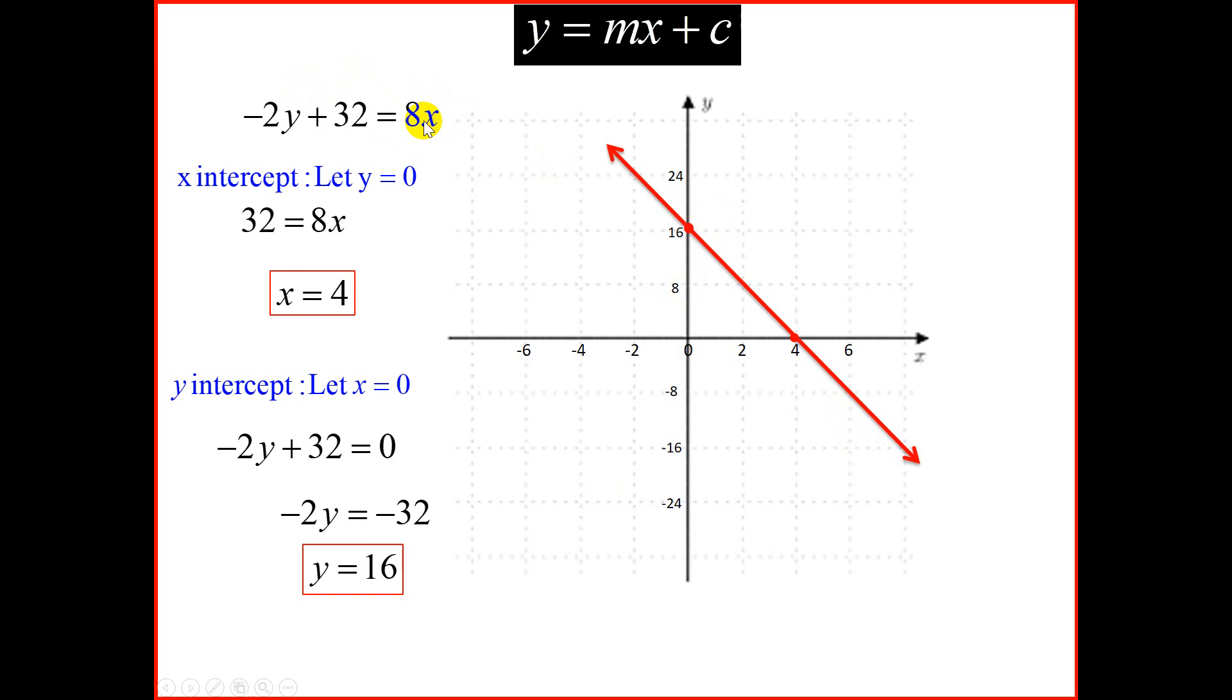Another way to do this is we could have brought this equation to standard form. Minus 2y plus 32 is equal to 8x. We could have brought this equation to y form. In other words, solve for y. Step 1, take your 32 on the other side, becomes negative 32. Minus 2y is equal to 8x minus 32. Then we're going to divide right through by negative 2. So that will give us y. 8 divided by negative 2 is minus 4. And negative 32 divided by negative 2 is plus 16. So we could have brought it to standard form. And from here, we can see our y-intercept is 16. And we're going to find our x-intercept by letting y to be 0. So that's also an option.